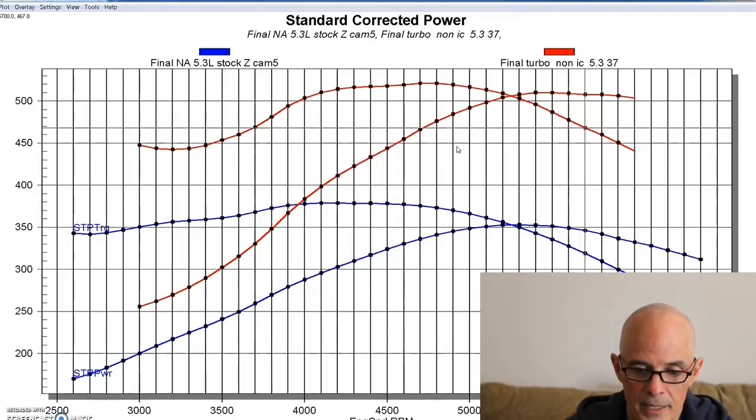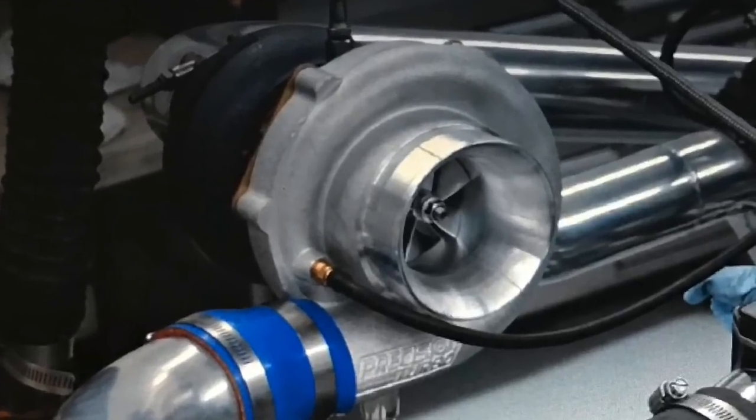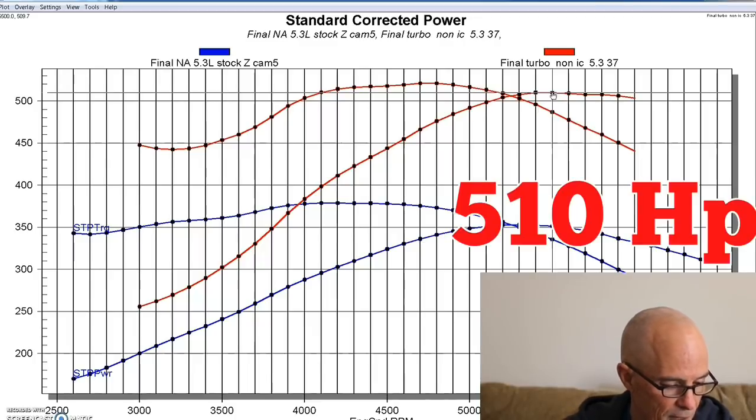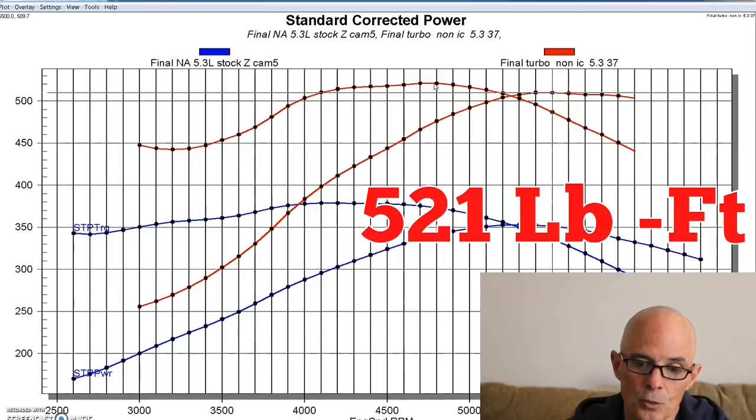That was a small precision turbo, a 67 millimeter precision turbo capable of way more power than this. But equipped with that single turbo kit and no intercooler, it produced 510 horsepower and 521 foot-pounds of torque.